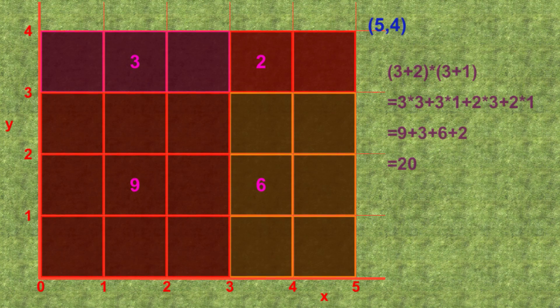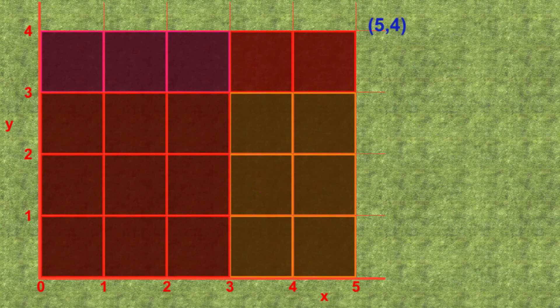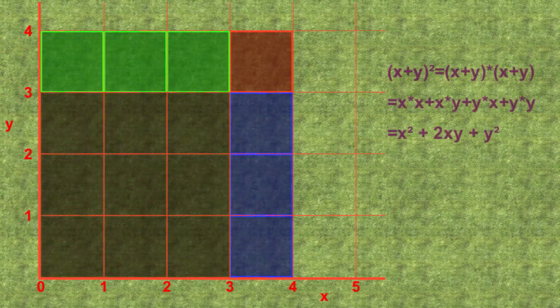Note how these four numbers can be represented on the area. The 3 by 3 square contributes 9 squares, the 3 by 1 rectangle 3, the 2 by 3 rectangle 6, and the 1 by 1 square 1, for a total of 20 altogether, as before.